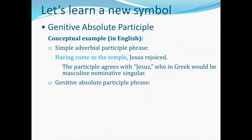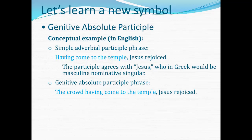Now let's look at a genitive absolute participle phrase for contrast: 'The crowd having come to the temple, Jesus rejoiced.' Now who does the coming? Jesus isn't the one who does the coming — the crowd does the coming. But what function does the word 'crowd' have in the sentence? Its only function is as the subject of that participle 'having come.' But to be the subject of a participle does not require a Greek word to be in any particular case — the agreement works the other way around. The participle's referent has its case determined by its function in the sentence, and then the participle is written in agreement with that. The word 'crowd' has no function in the sentence except to be the subject of that participle.